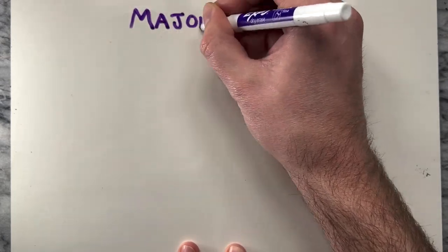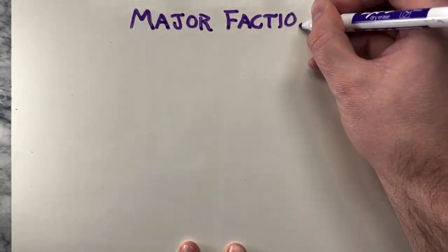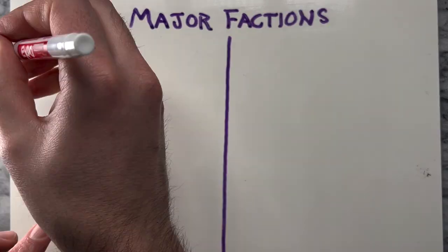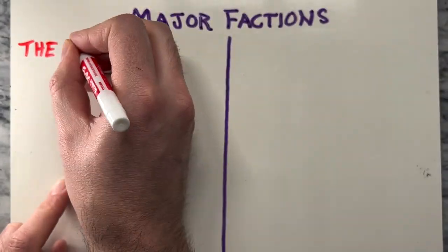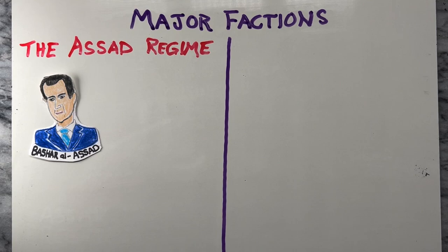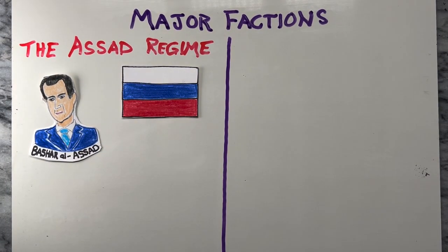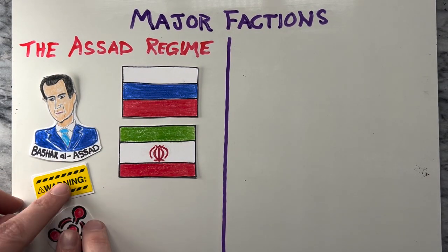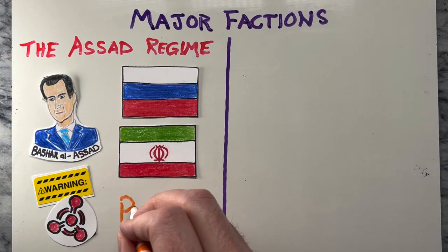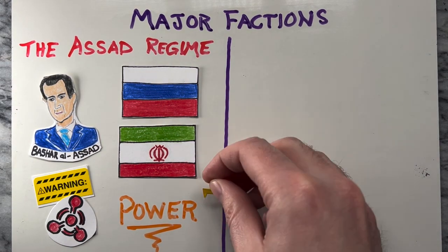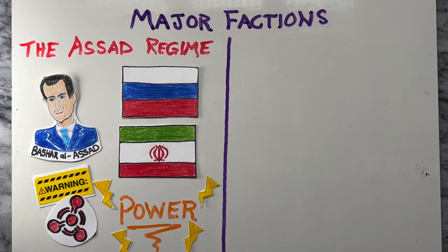The Syrian Civil War is a multi-sided conflict involving several major factions with their own distinct interests and goals. First, the Assad regime — the government of President Bashar al-Assad — is supported by Russia, Iran, and other allies. The regime seeks to maintain its grip on power and crush the opposition by any means necessary, including the use of chemical weapons and other atrocities.